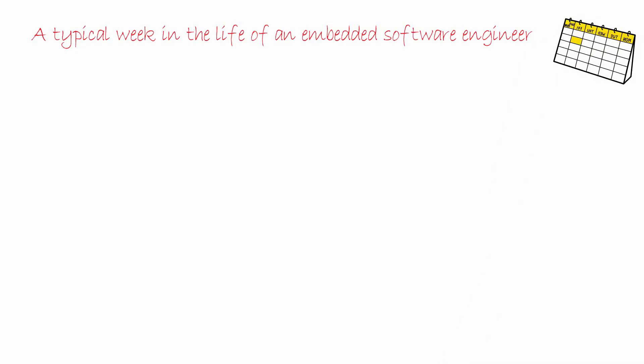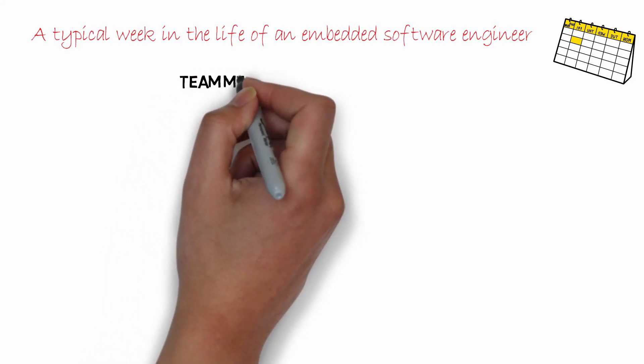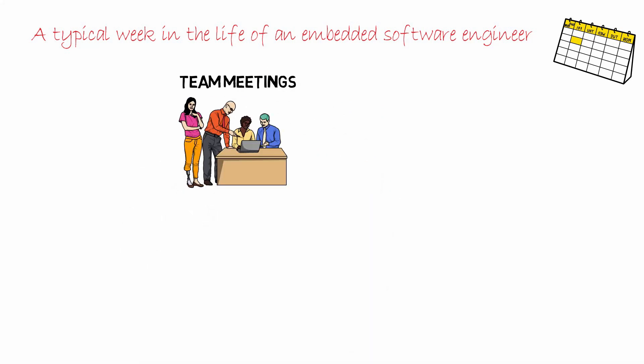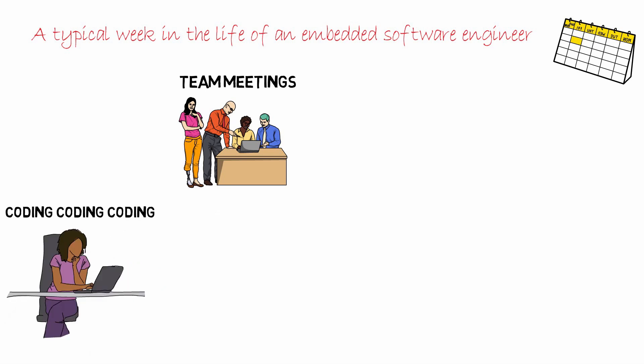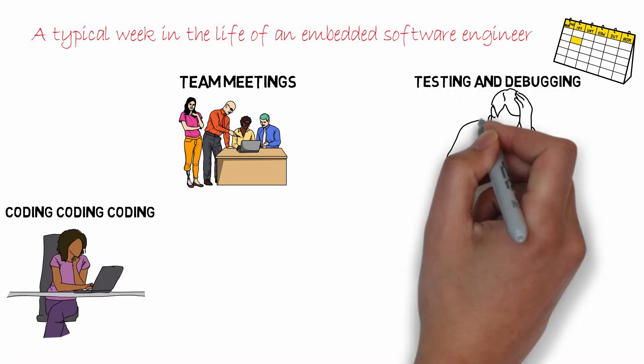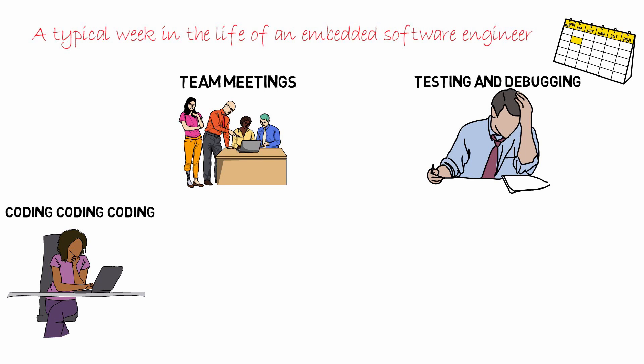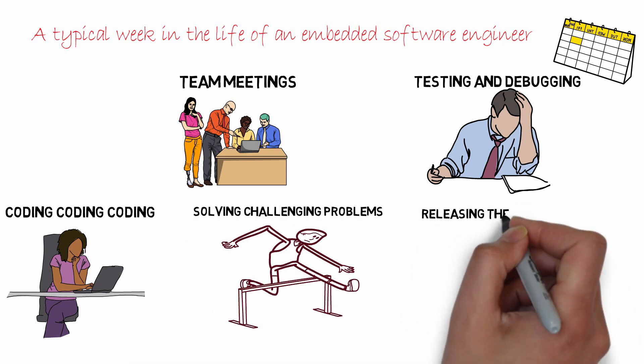Now the fun part — a typical week in the life of an embedded software engineer. A developer's week typically consists of: team meetings to discuss the architecture of the next feature to be released, coding the discussed features, testing new features (as new features will inevitably introduce bugs in previously working code), discussions and debates on what caused the bugs and which is the best solution, and finally fixing the bug and releasing the software.